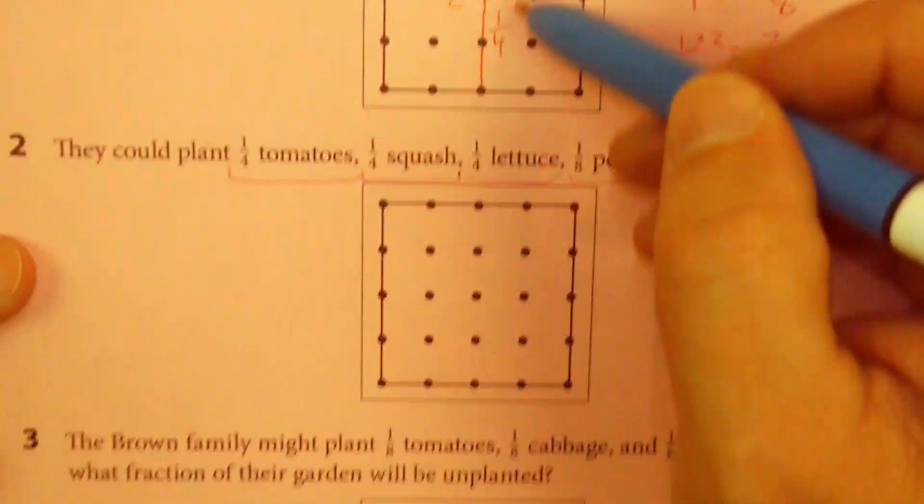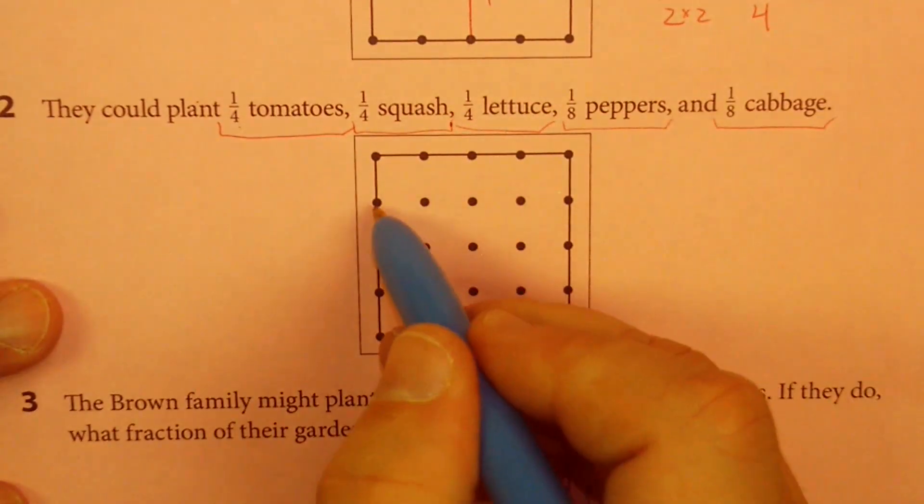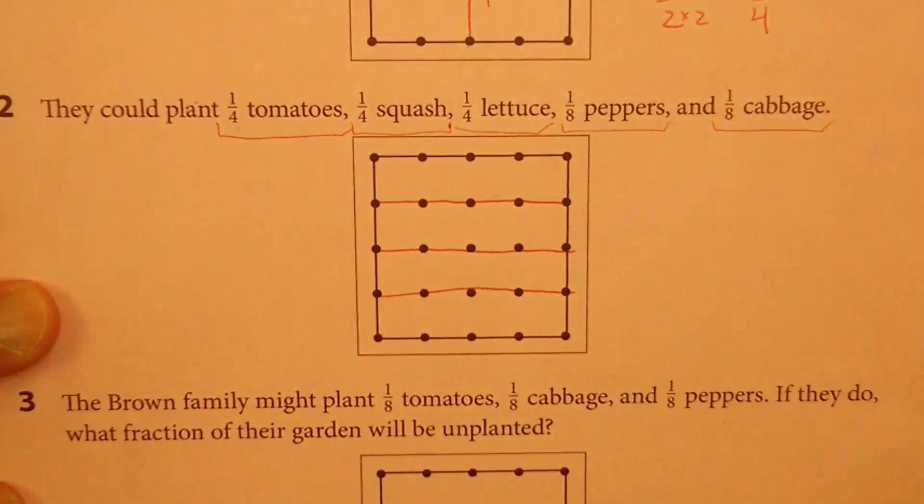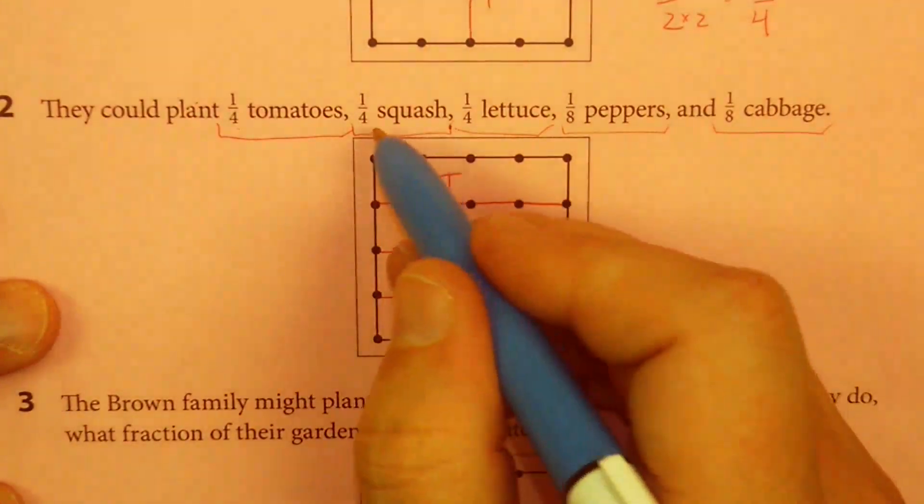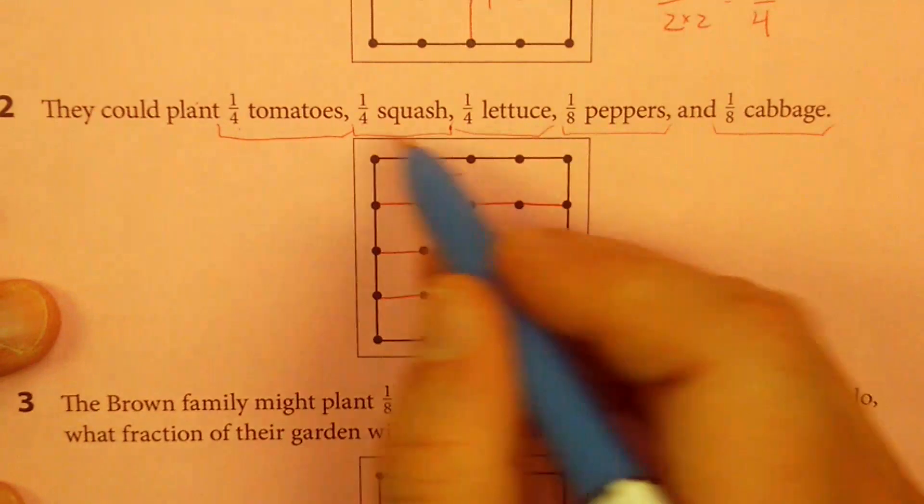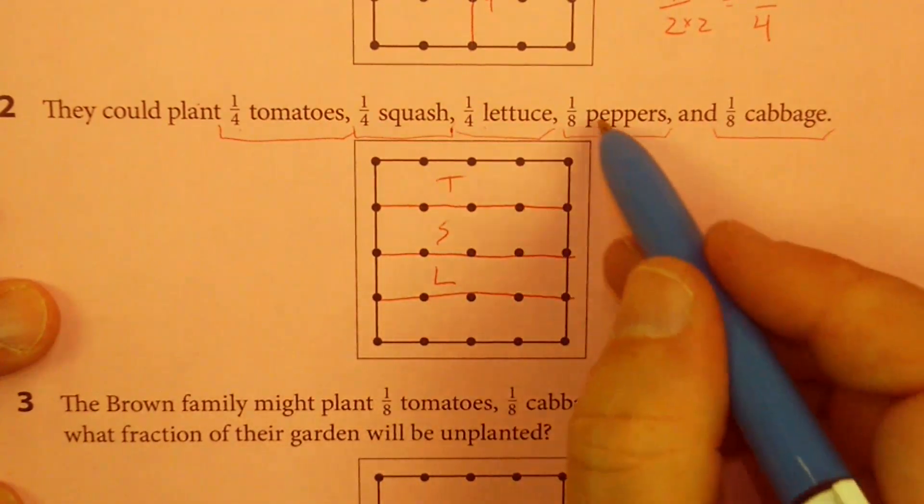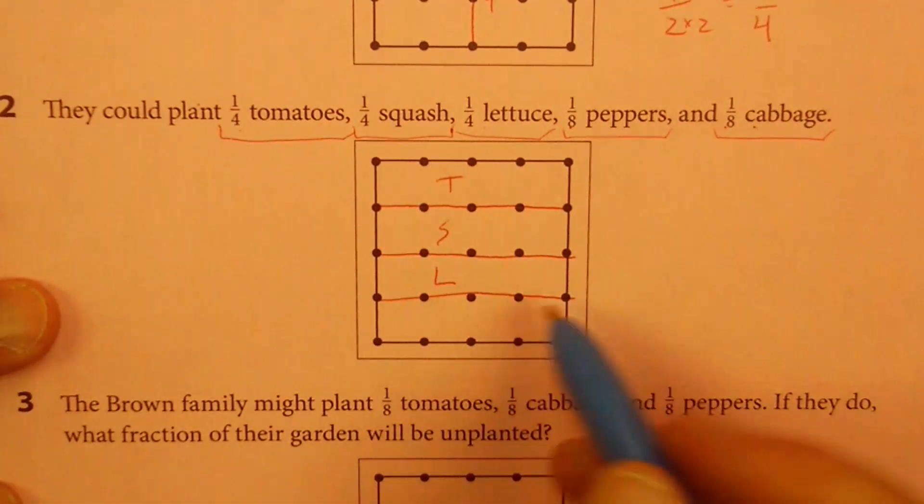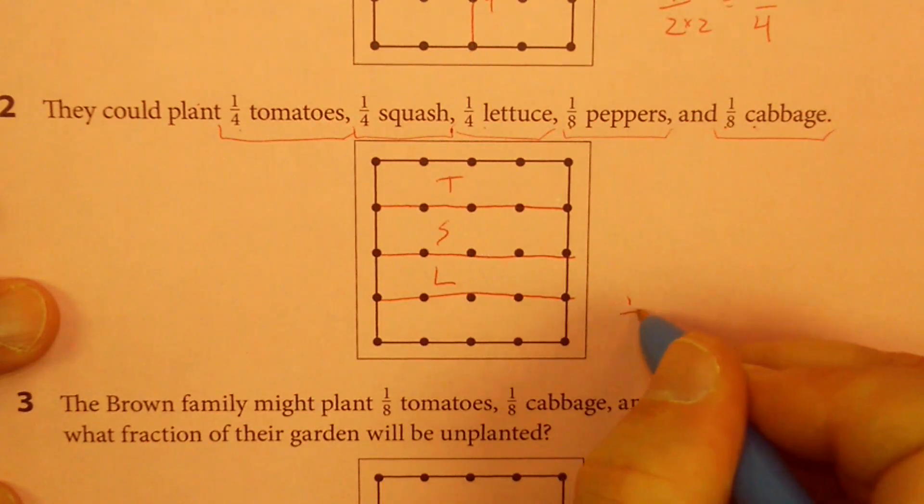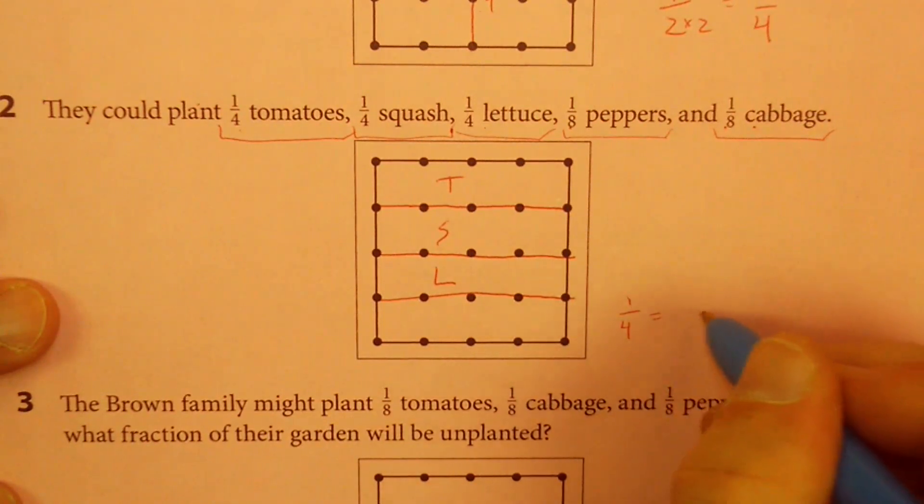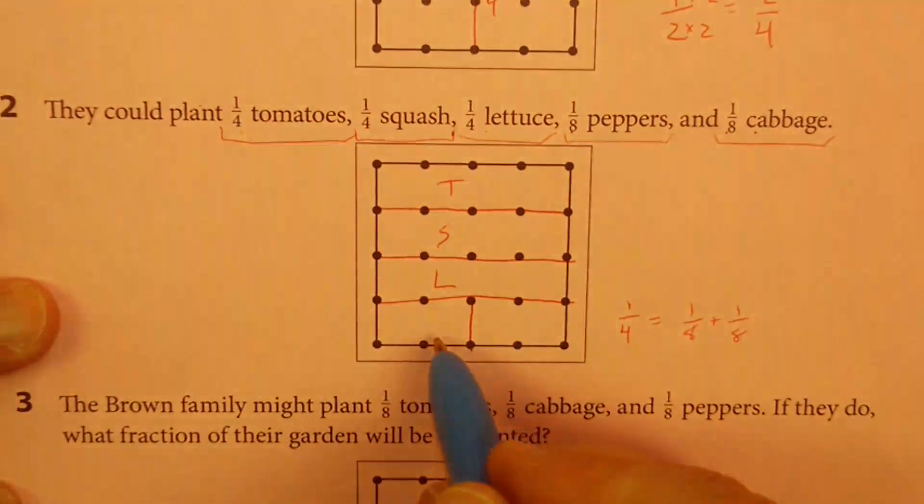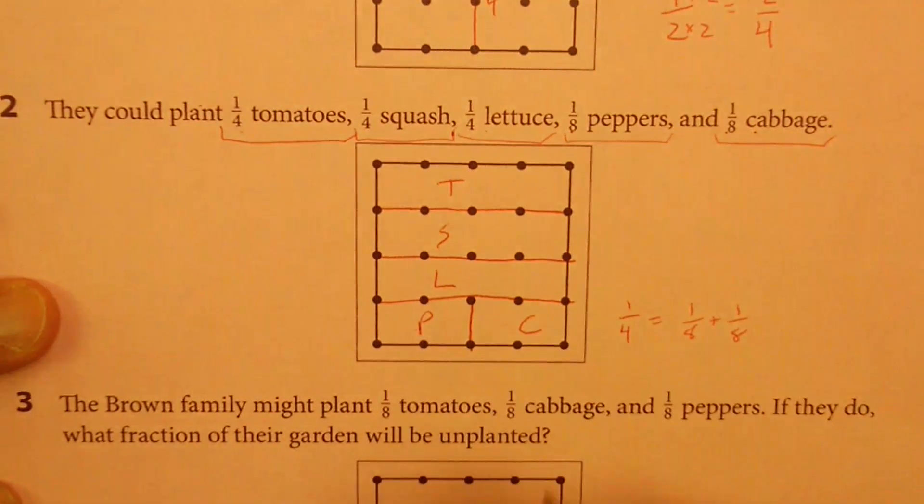But this time, rather than doing squares like we did up here, why don't we try the little bacon strips and see what happens? Okay. So I have one-fourth, one-fourth, one-fourth, one-fourth. One-fourth tomato. One-fourth squash. One-fourth lettuce. Uh-oh, now I have an eighth and an eighth. But what am I left with? I have a quarter here. So if I take one-fourth and I split it, I can split it into one-eighth and one-eighth. So I need to take this quarter and split it, and now I have one-eighth and one-eighth, and I can have peppers and cabbage.